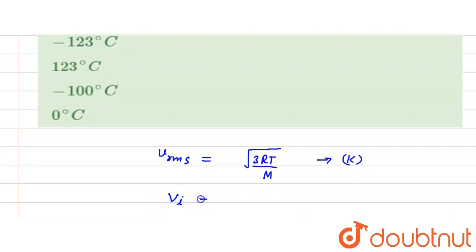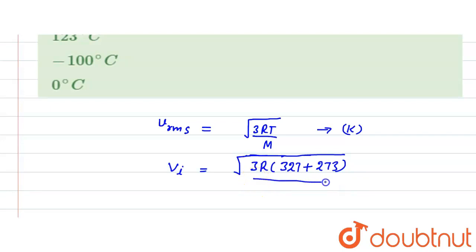So here we write V_initial is equal to square root of 3R, converting degrees to Kelvin, so we can write 327 plus 273 upon M.